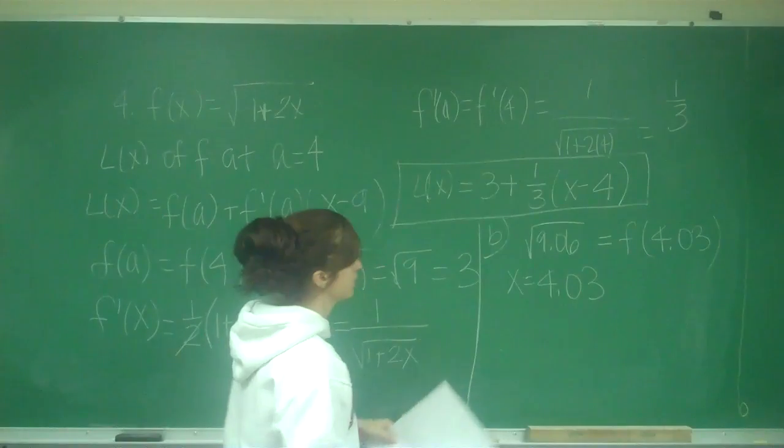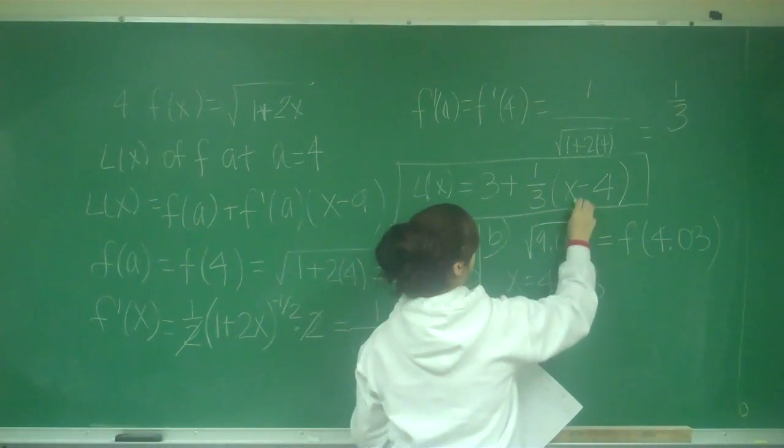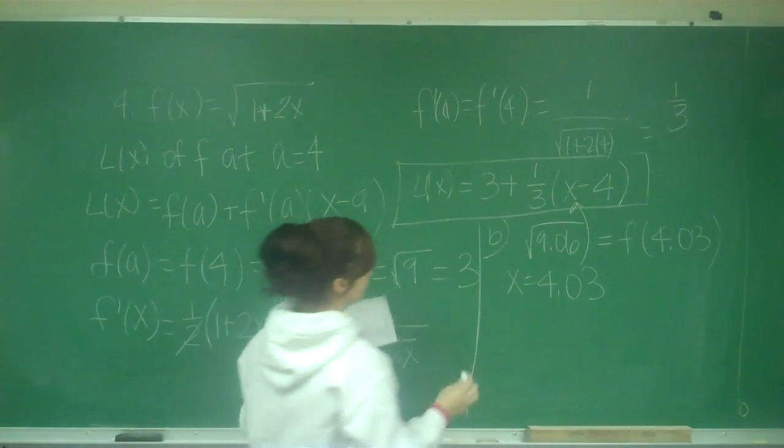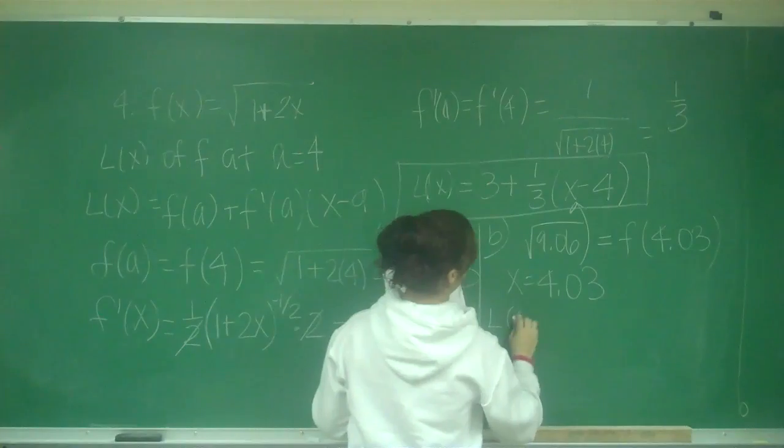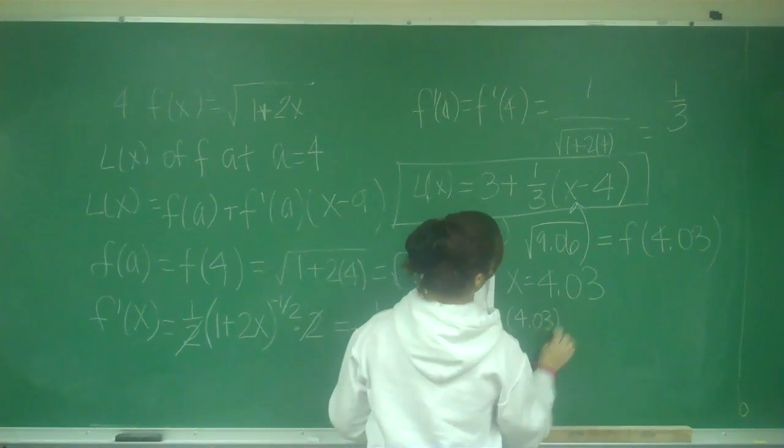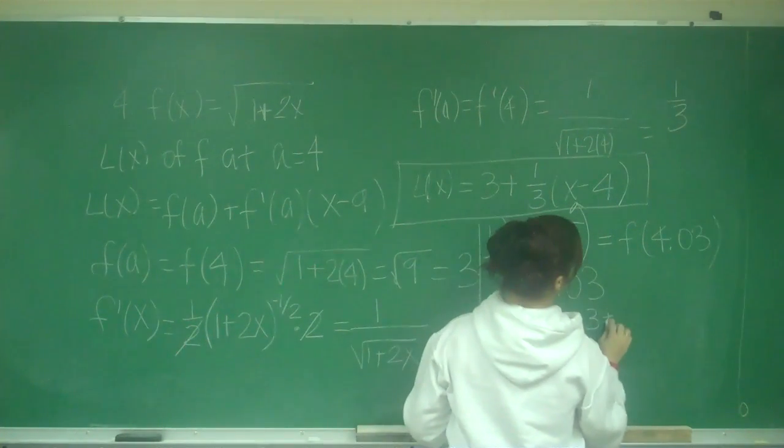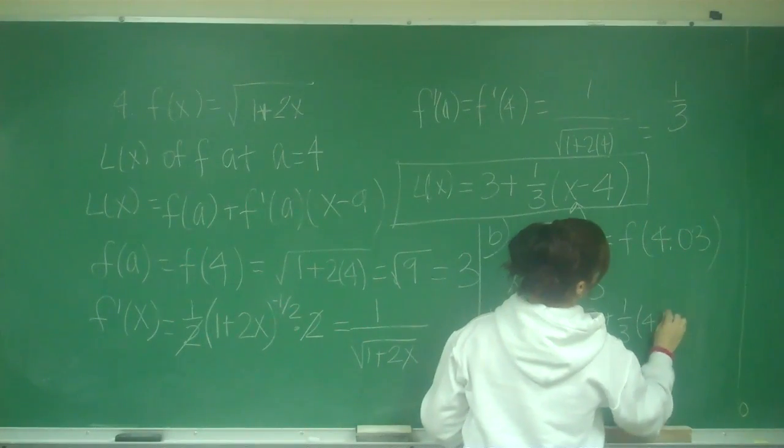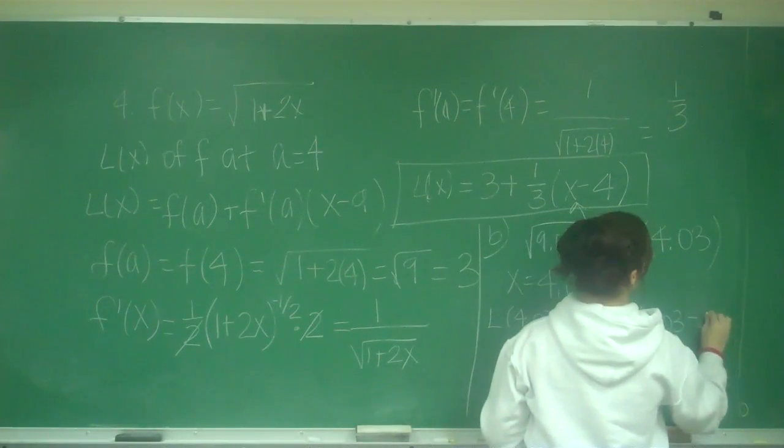And all I have to do is plug it into x of my equation. So I have L(4.03) is equal to 3 plus 1/3, 4.03 minus 4.